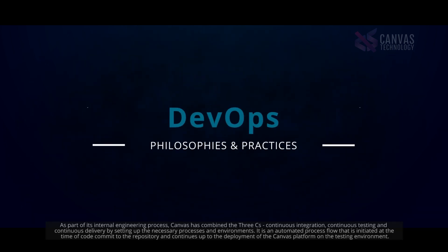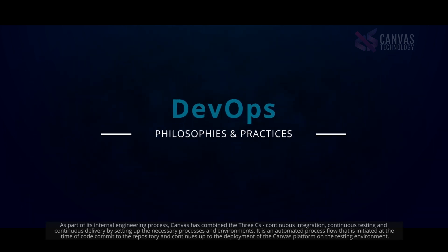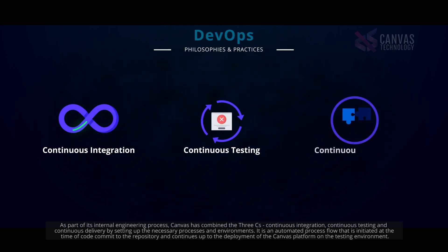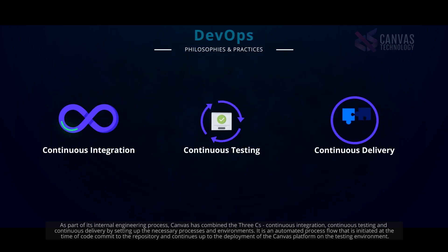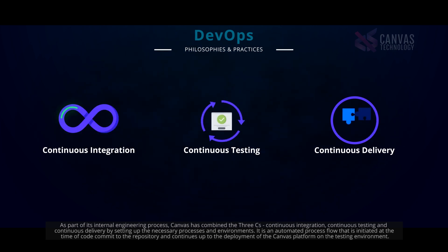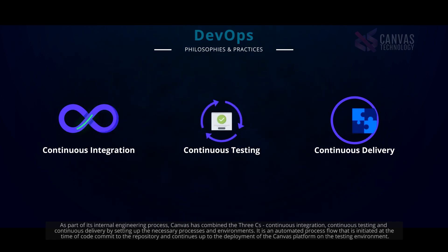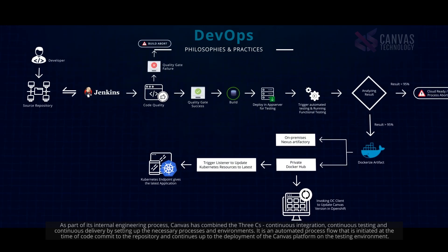As part of its internal engineering process, Canvas has combined the three Cs — continuous integration, continuous testing, and continuous delivery — by setting up the necessary processes and environments. It is an automated process flow that is initiated at the time of code commit to the repository and continues through to the deployment of the Canvas platform on the testing environment.